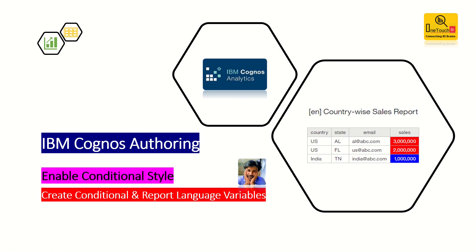Hello everyone, welcome back to OneTouch BI. My name is Saravanan Vajrabhala and today in our class we are going to learn how to enable conditional style and create a conditional variable and report language variable, to be used to dynamically render your report title based on the language selection chosen in IBM Cognos connection, My Preference, Content Language.